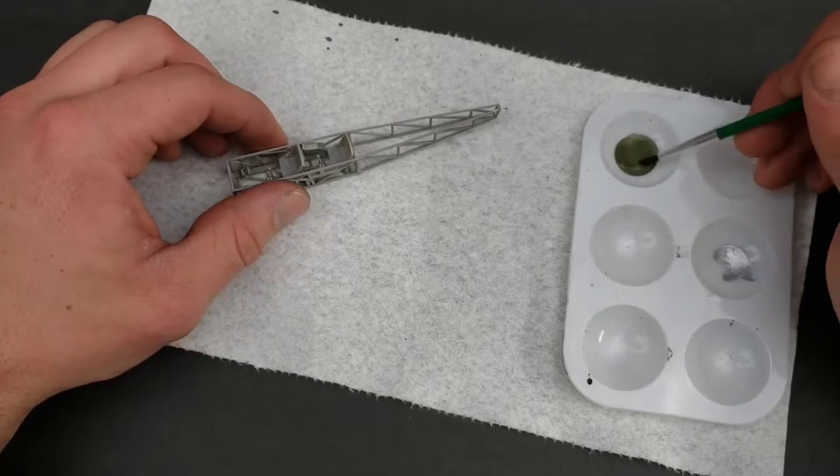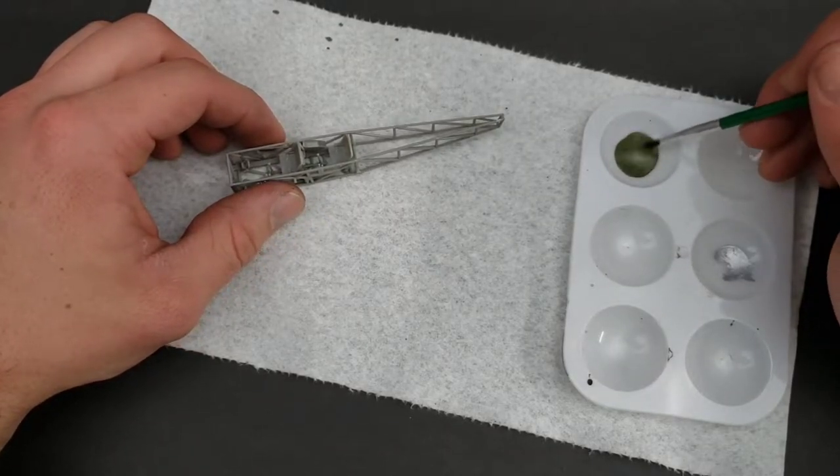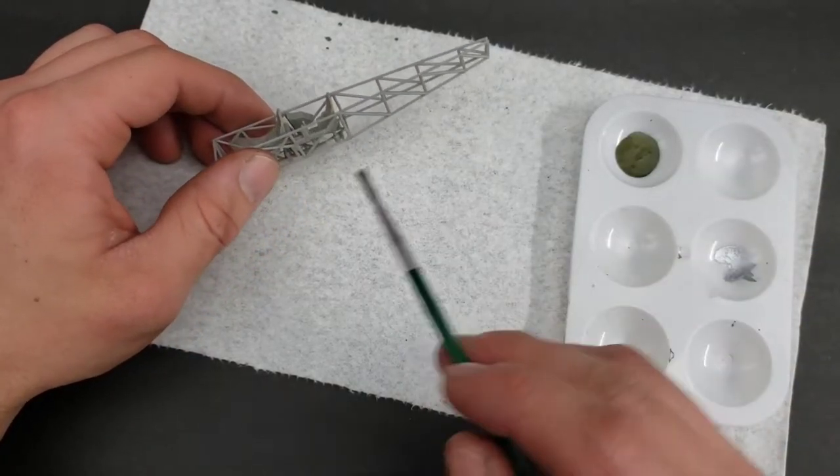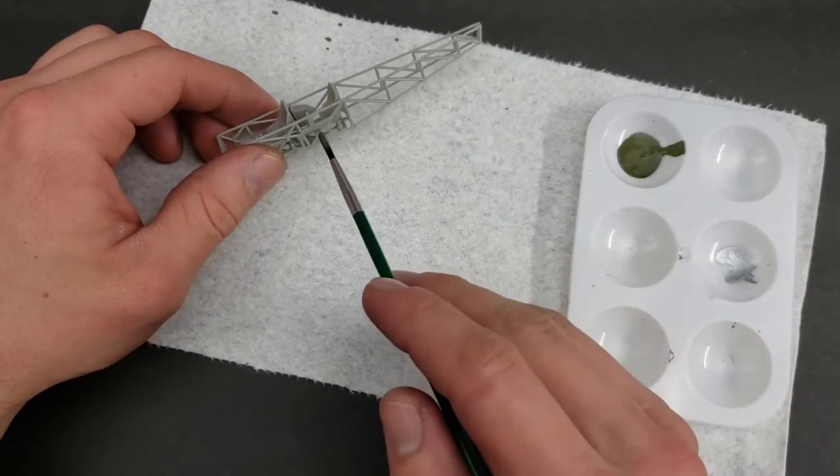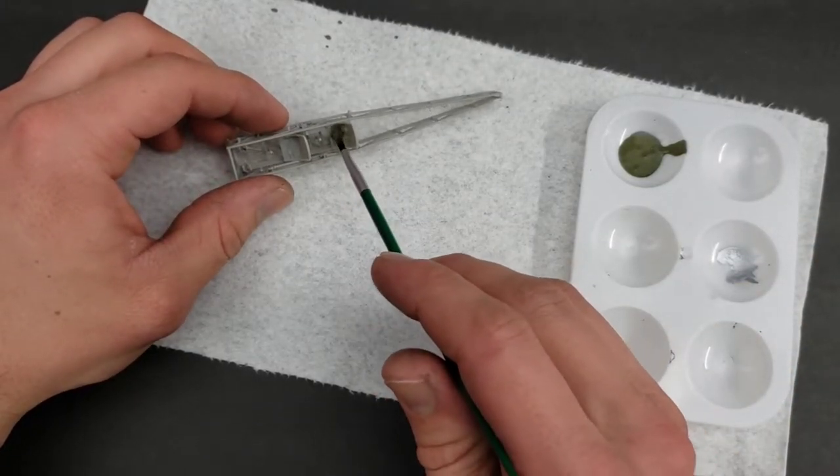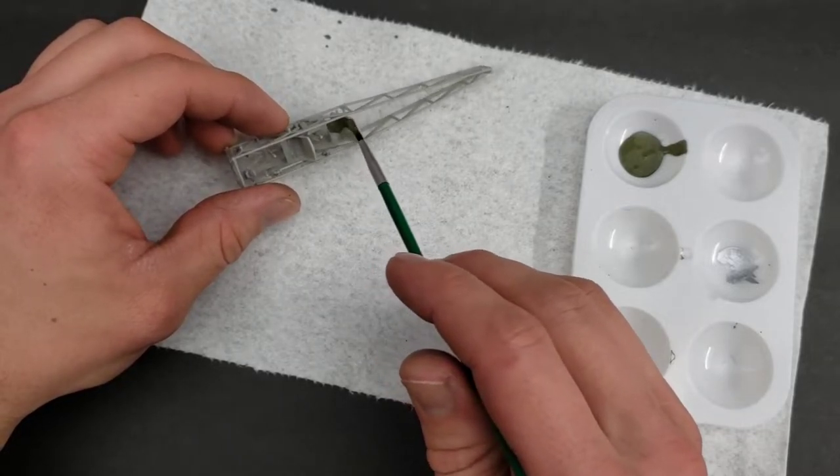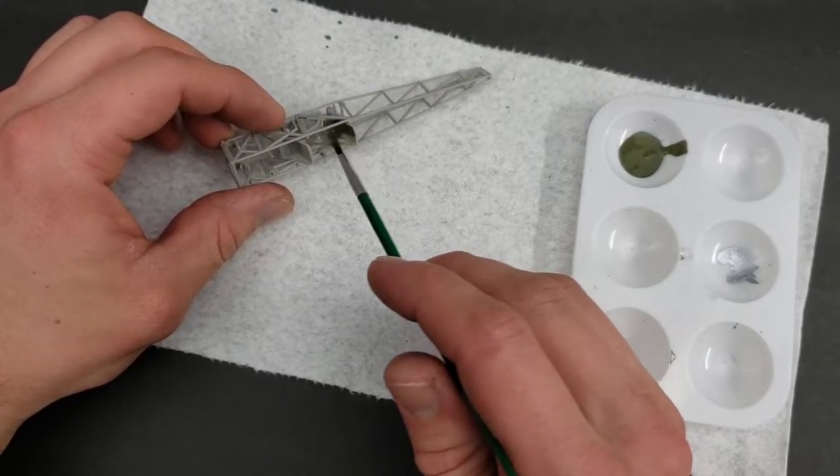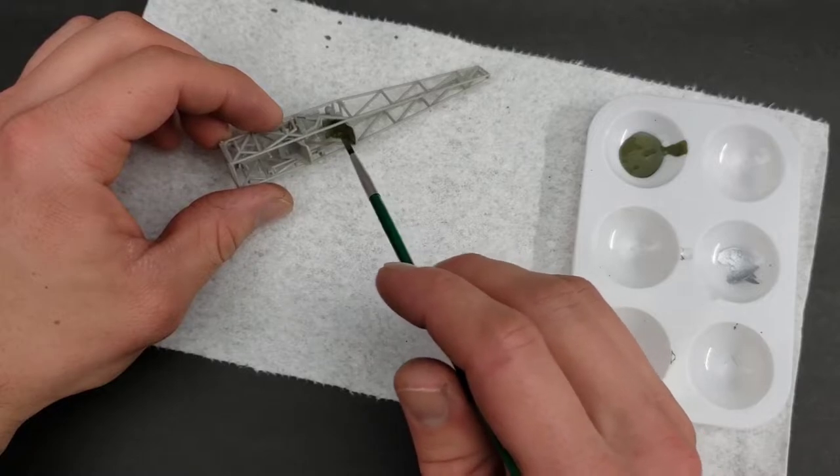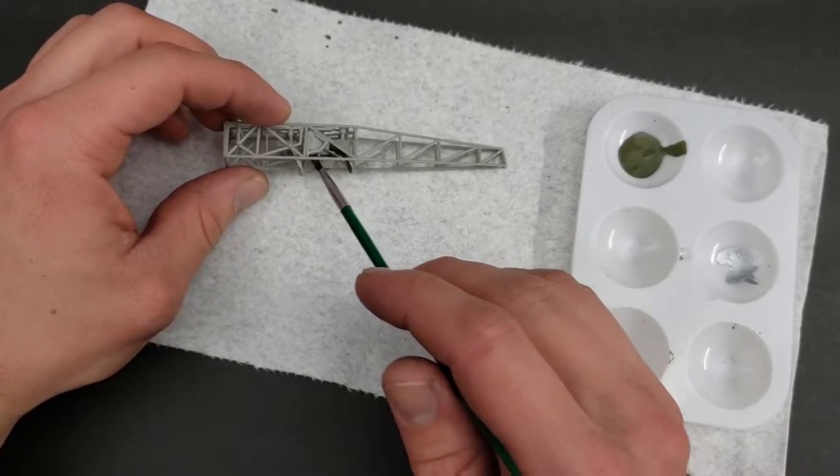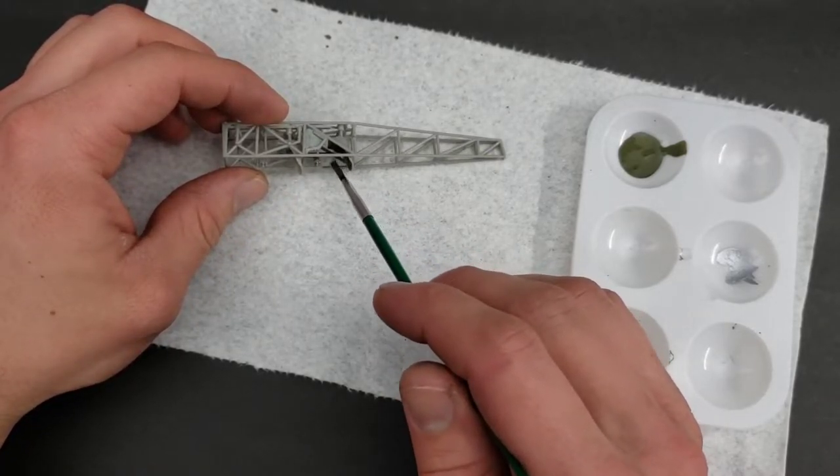When applying the paint, you want to load up your brush with paint and wipe off the side because you don't want too much paint going on to the model. It's going to take too long to dry and you're going to have some drips. You want to delicately make your way around the model making sure that you're applying the paint evenly.